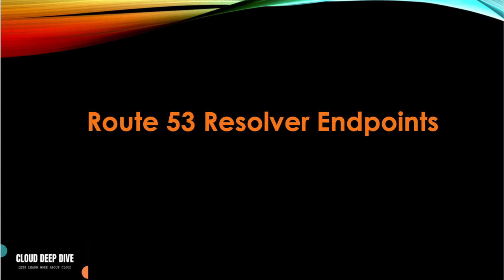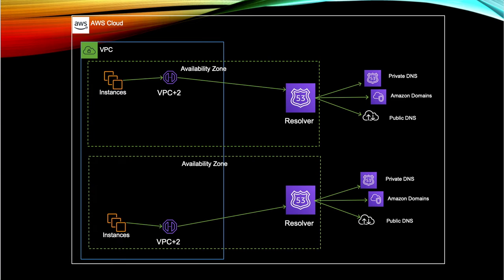So let's get started. When we create a VPC, your Route 53 Resolver automatically answers all the DNS queries. Route 53 Resolver basically maps to your VPC plus-2 address. We all know that a VPC has a few IP addresses reserved, and dot-2 is for their DNS resolver. So whenever a query goes to the resolver, this DNS resolver or Route 53 Resolver answers all your DNS queries.